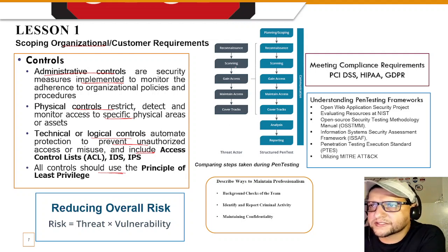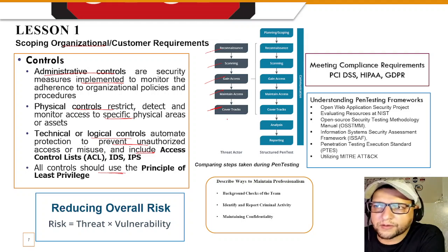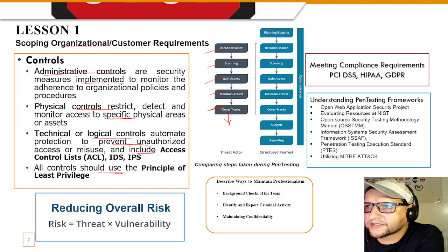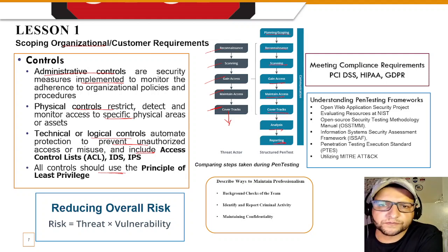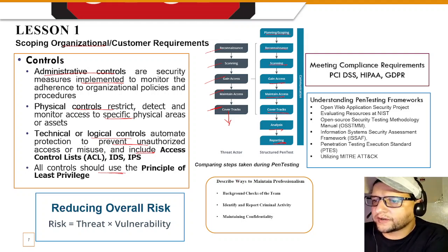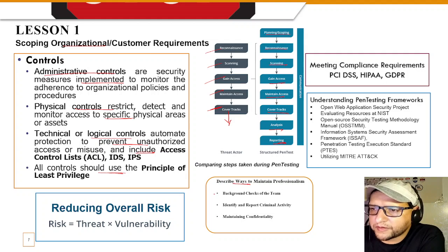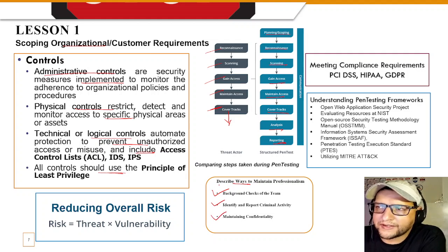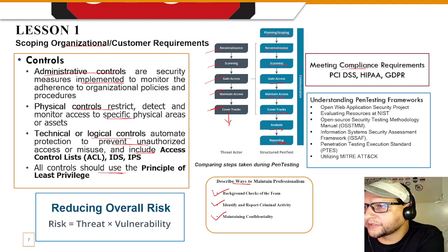You'll also learn about risks, threats, and vulnerabilities, and how to reduce risk. You'll learn the five phases of hacking — reconnaissance, scanning, gaining access, maintaining access, and covering tracks — as well as penetration testing phases: planning, scoping, reconnaissance, scanning, gaining access, maintaining access, covering tracks, analysis, and reporting. You'll understand professionalism, background checks, reporting criminal activity, maintaining confidentiality, compliance frameworks like PCI DSS, HIPAA, and GDPR, and pen testing frameworks including OWASP, NIST, OSSTMM, and ISAFF PTS.